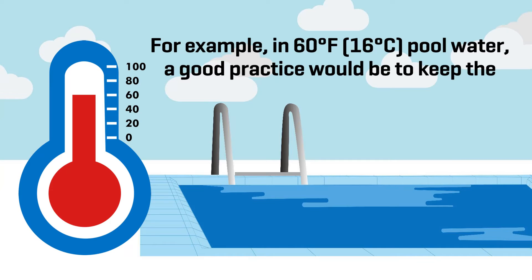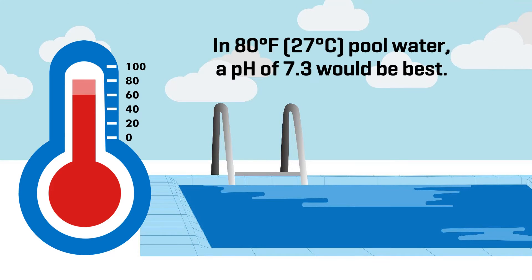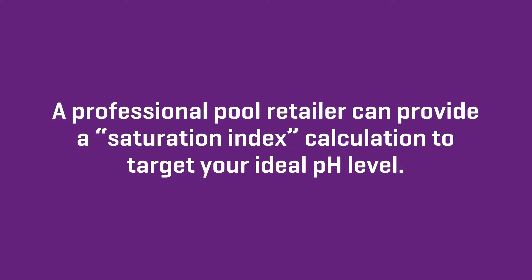For example, in 60 degree Fahrenheit (16 degree Celsius) pool water, a good practice would be to keep the pH level closer to 7.6 if the alkalinity and hardness are in the ideal range. In 80 degree Fahrenheit (27 degrees Celsius) pool water, a pH of 7.3 would be best. A professional pool retailer can provide a saturation index calculation to target your ideal pH level.